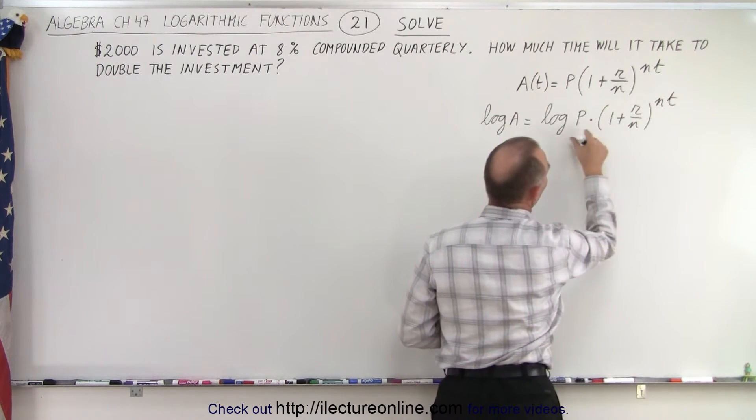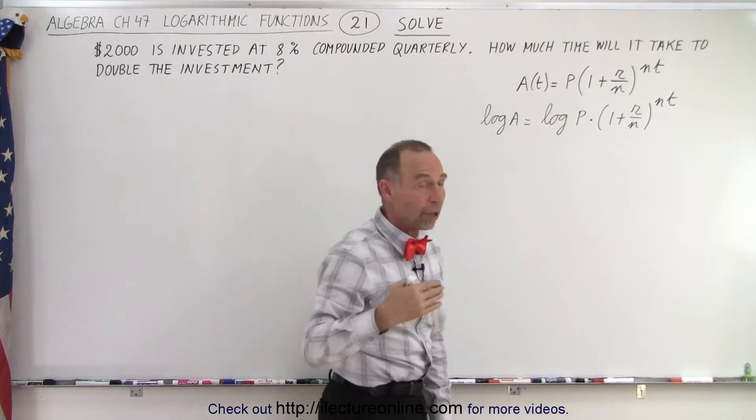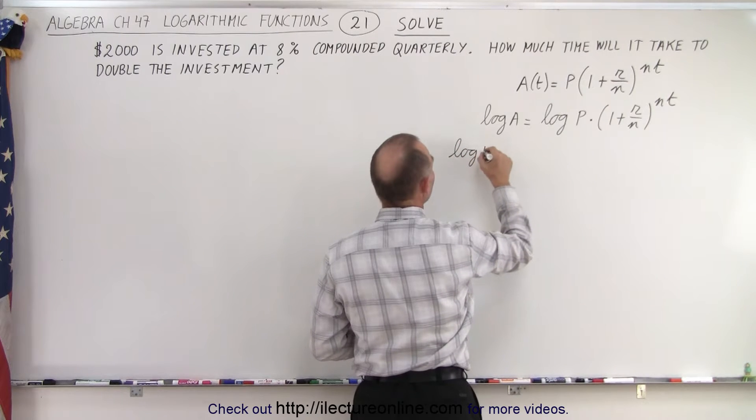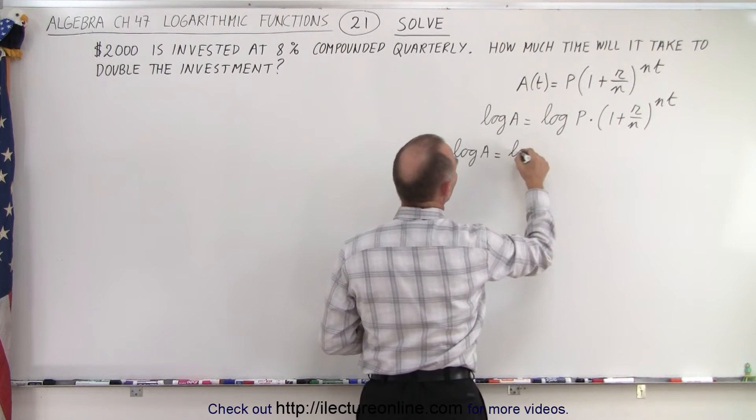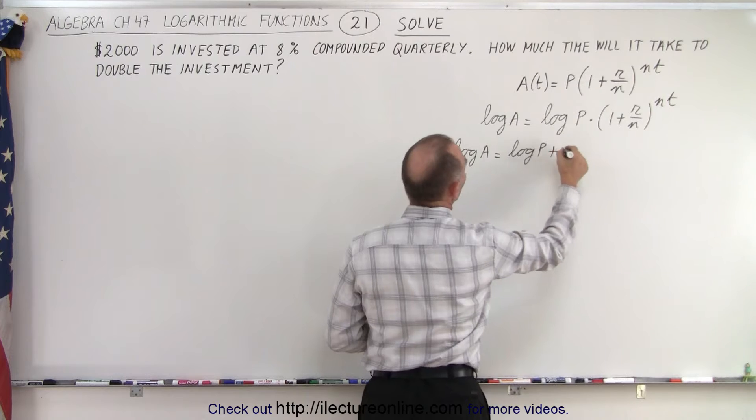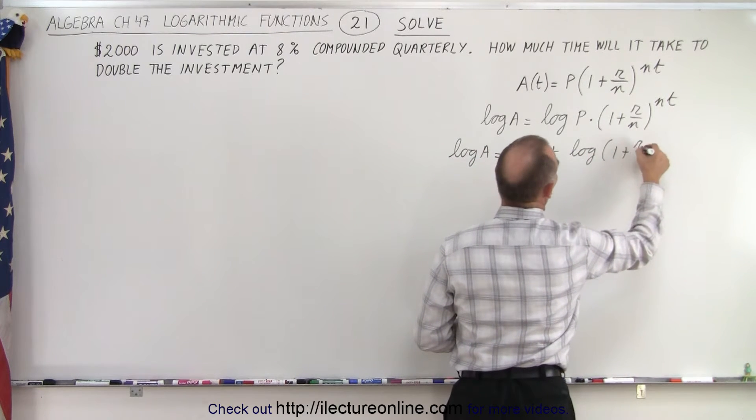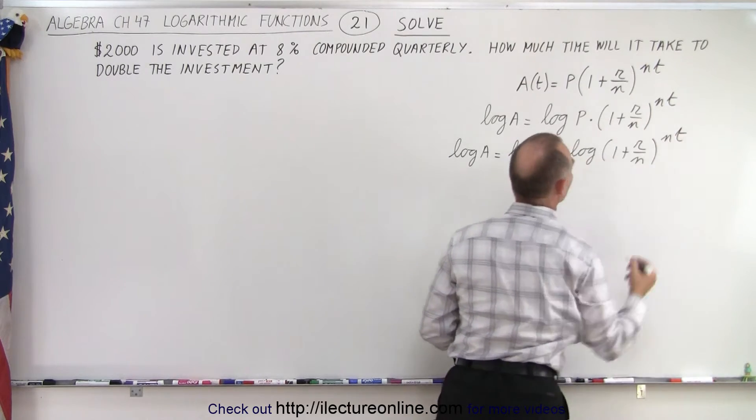So notice there's a product over here, and with the rules of logarithms we can separate those. So what we can do here is we can say that the log of A is equal to the log of P plus the log of 1 plus r over n to the nt power.